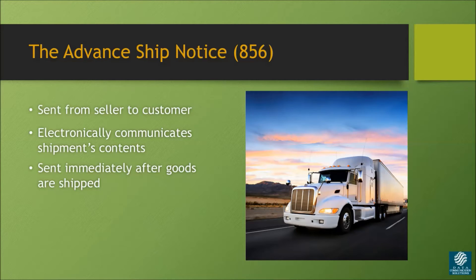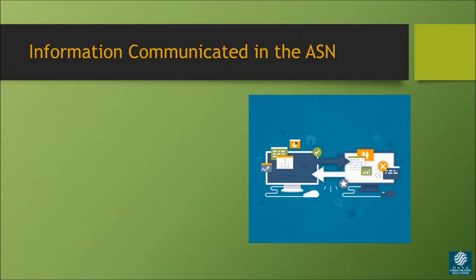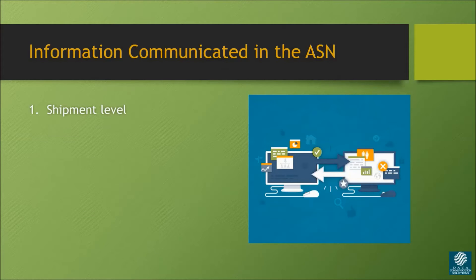There are four specific types of information typically communicated through the ASN. The first is shipment level information, related to the carrier, shipment tracking numbers, shipment weight, and addresses for the ship from and ship to points.